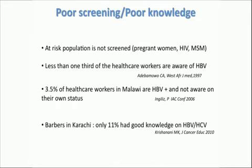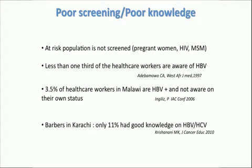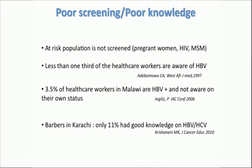But vaccination is not the only factor. There are additional factors like poor screening and poor knowledge about viral hepatitis B. In Africa, at-risk populations are not screened properly — pregnant women, HIV patients, and men who have sex with men are not screened for viral hepatitis B or C. It has also been demonstrated in several small African studies that even health care workers are not aware of viral hepatitis B. For example, 3.5% of health workers in Malawi were HBV-positive but were not aware of their status, and 10% of them were also infected with HIV without knowing.